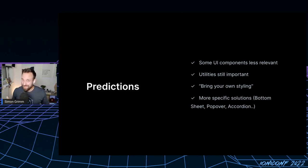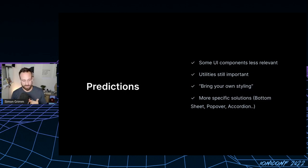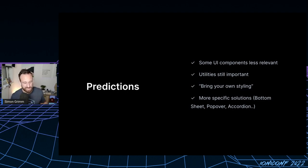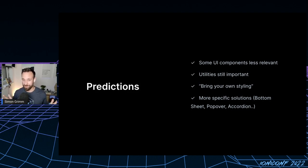I also think we're going to see more specific solutions. We already saw the great bottom sheet / drawer component, and the updated ion-date component. Specific solutions like the popover, the accordion — those will continue to be important and there will be more of them, because they bring real value compared to something like ion-label which you can replicate in other ways. That's everything for my predictions — we'll see how it plays out.